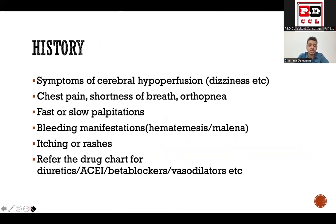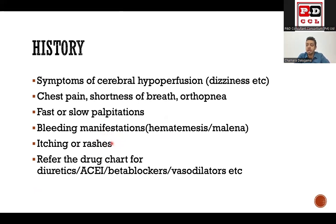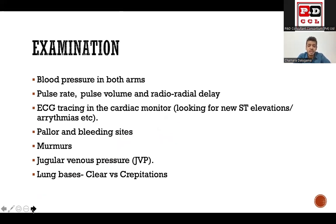In the focused history: ask about symptoms of cerebral hypoperfusion such as dizziness, chest pain, shortness of breath, orthopnoea — to assess for re-infarction. Ask about palpitations, fast or slow, and bleeding manifestations such as melaena or haematemesis. Ask about any fall or pain elsewhere. Ask about itching, rashes, or wheeze suggesting anaphylaxis. Review the drug chart for diuretics, ACE inhibitors, beta-blockers, or vasodilators.